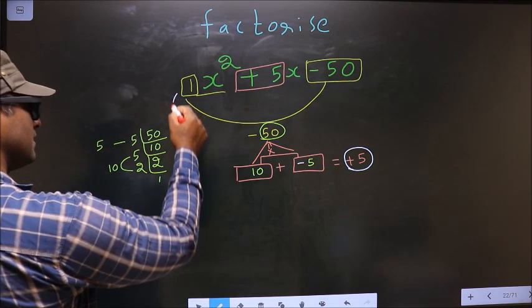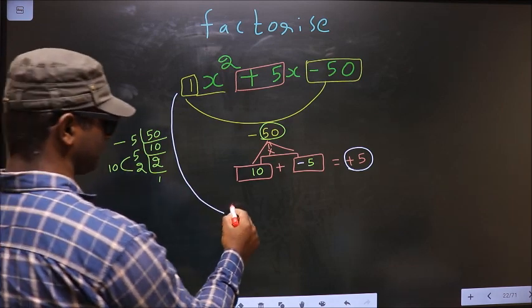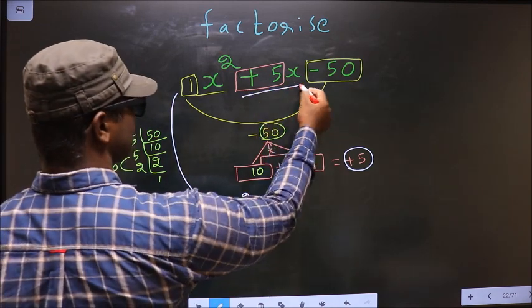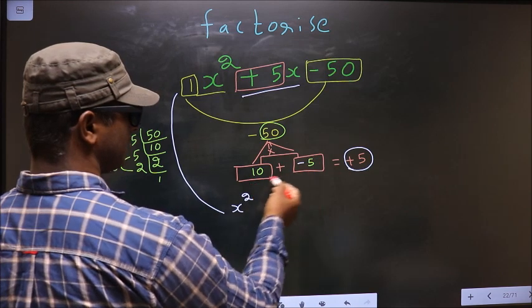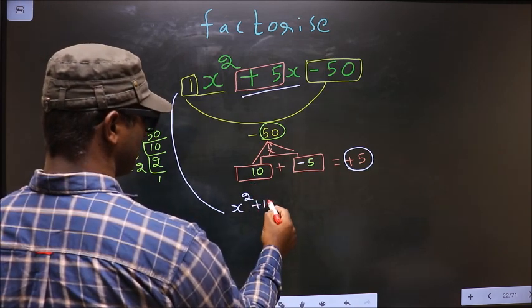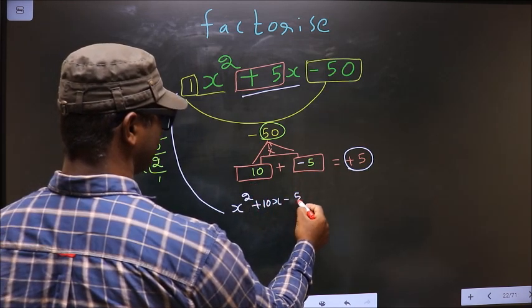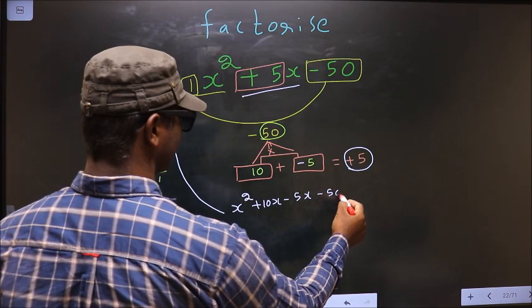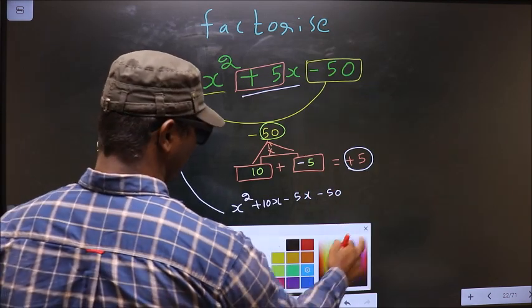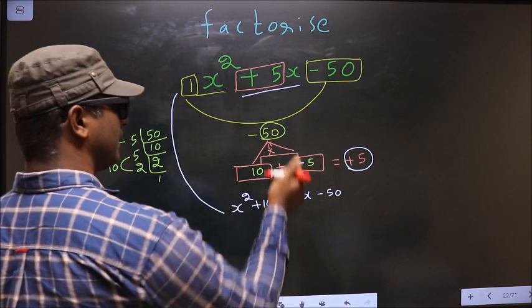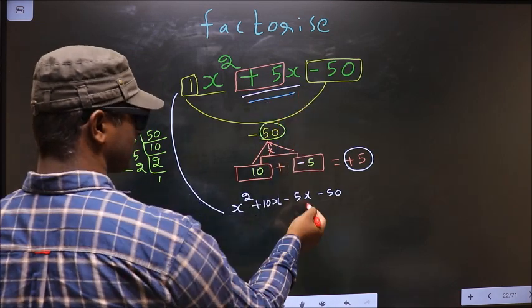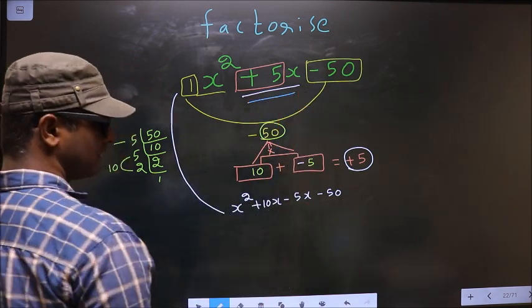Now you change this to x². In place of 5x, now you write this: that is +10x - 5x - 50. In place of +5x I have written this. Next,